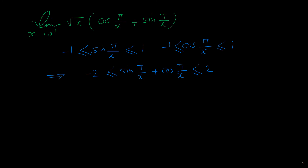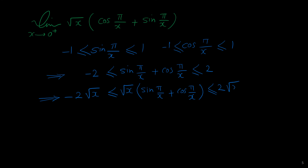By multiplying this relation by square root of x, we get: negative 2 times square root of x is less than or equal to square root of x times (sine of pi over x plus cosine of pi over x), which is less than or equal to 2 times square root of x. Note that when multiplying an inequality by something, you must ensure that expression is positive — otherwise you have to flip the inequality. Here, because square root of x is always positive, we don't need to flip it.